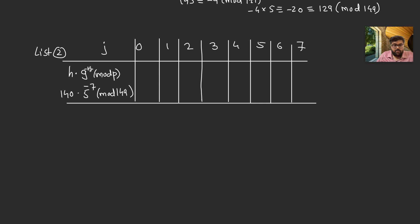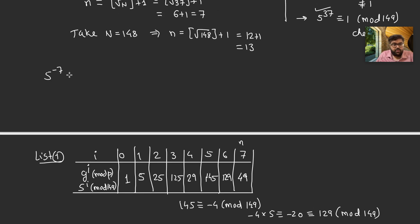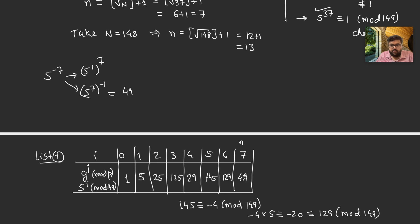There are two ways: compute 5^{-1} and raise to power 7, or compute 5^7 and then find its inverse. Since we already know 5^7 = 49 from List 1, we'll find 49^{-1} mod 149.